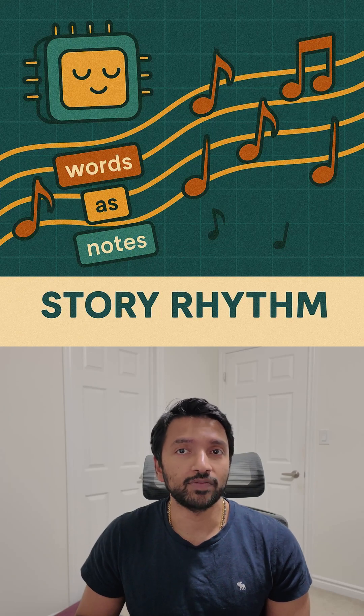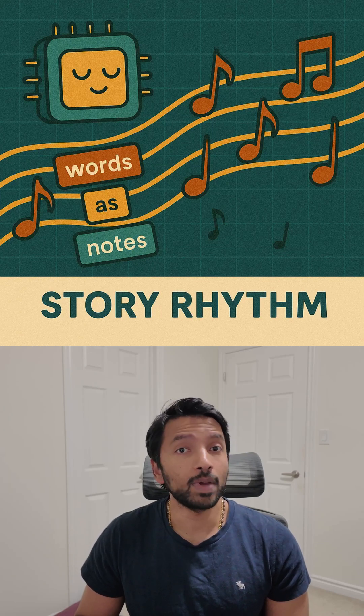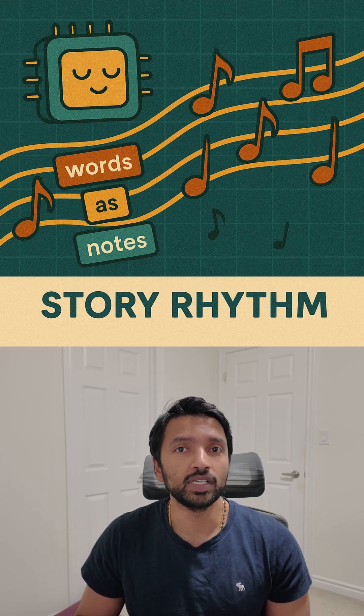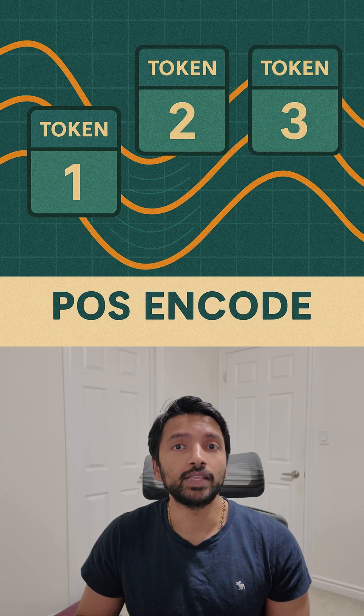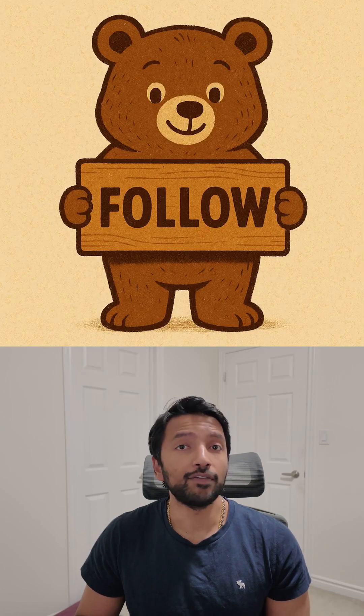So next time AI gets the sequence of a story just right, remember it's not just reading words — it's feeling their rhythm. That is called positional encoding.